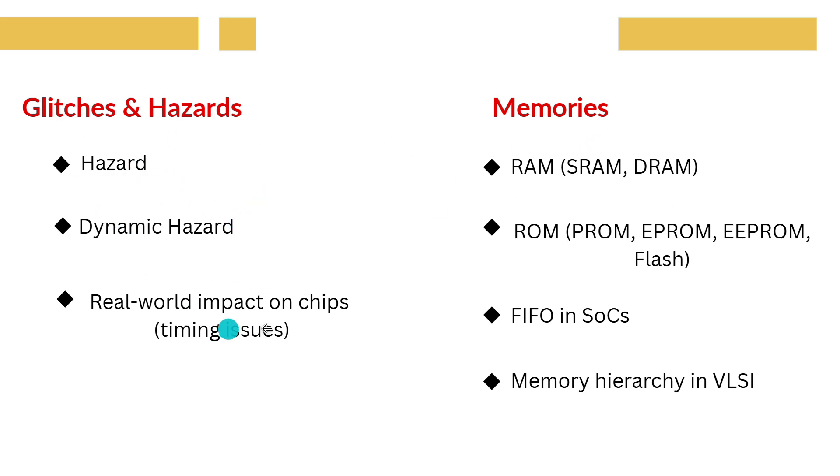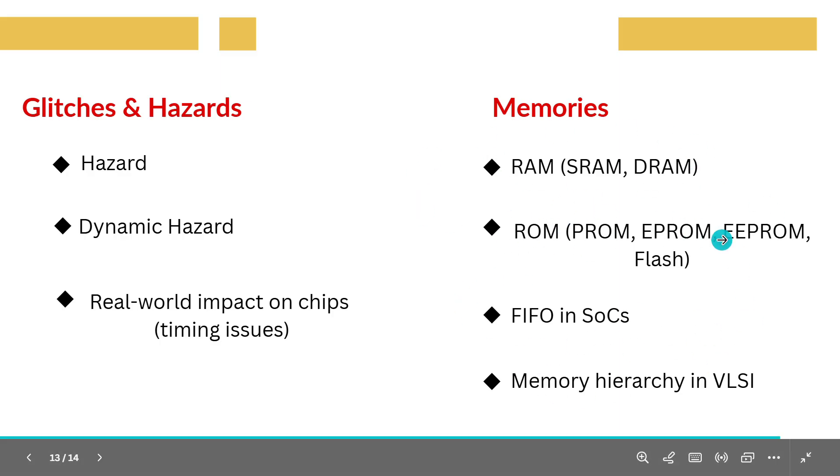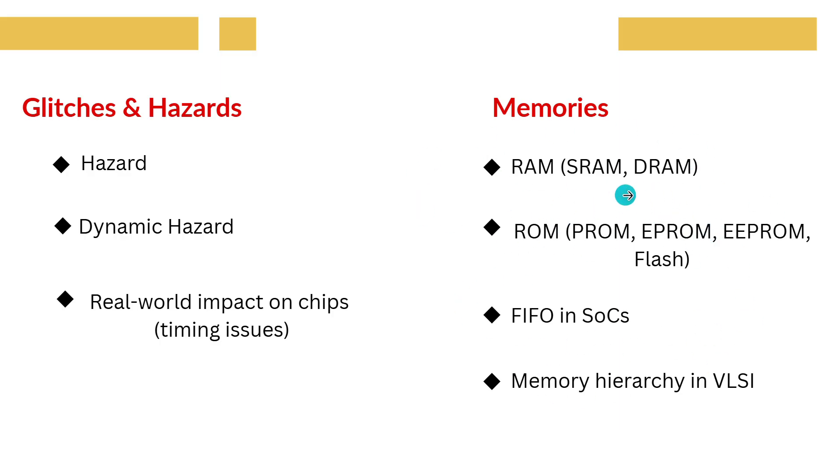Let us understand memories. Memories are crucial in every chip. There are RAMs like SRAM and DRAM, and ROMs like PROM, EPROM, EEPROM and Flash.